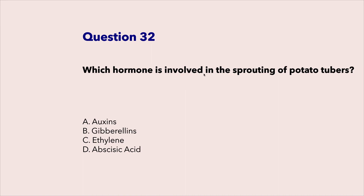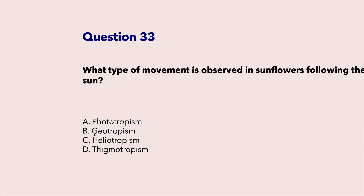Which hormone is involved in the sprouting of potato tubers? Ethylene. What type of movement is observed in sunflowers following the sun? Heliotropism.